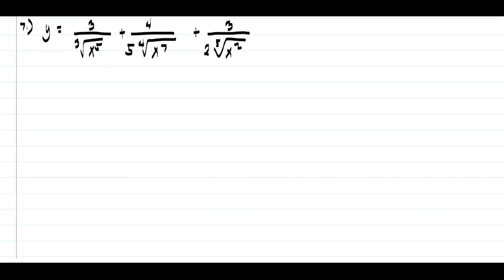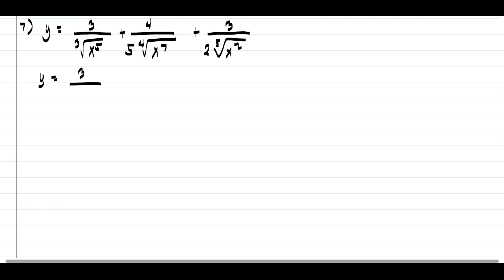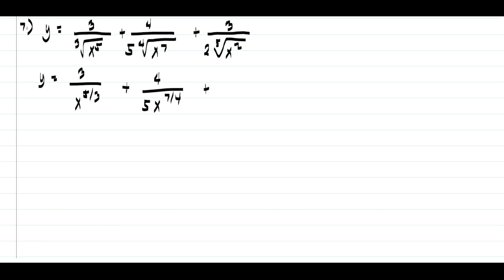In order to simplify this, we need to convert the radical form into exponential form and rewrite it in the numerator. So we rewrite as 3 over x raised to 5/3, plus 4 over 5 times x raised to 7/4, plus 3 over 2 times x raised to 2/5.